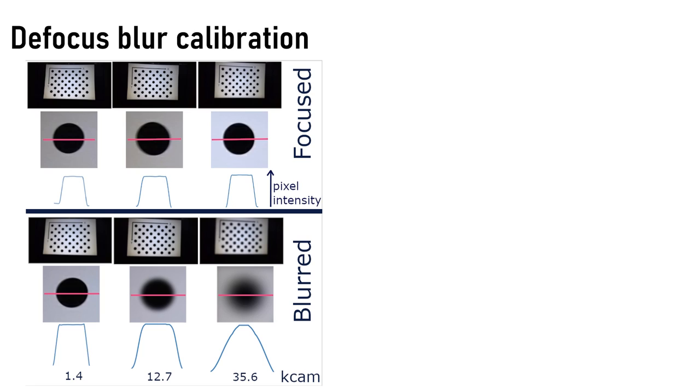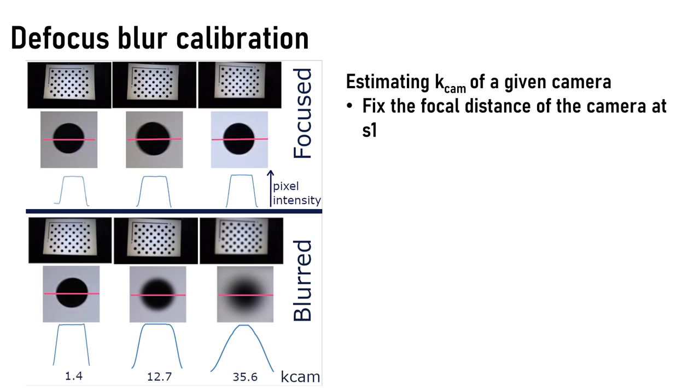If we have a trained model from images taken from a camera and we need to use the same model to estimate depth from other cameras, we need to present a novel solution that can estimate the camera parameter, which we call defocus blur calibration. To do this, we first fix the focal distance of the camera at S1. S1 can be any value, but in our experiments in the paper we use S1 equals 2 meters, and then we calibrate the camera with a circular asymmetrical pattern.